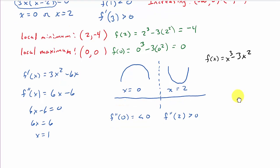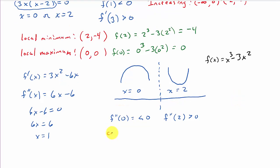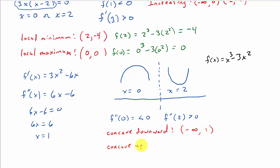So now we know that this is concave downward from negative infinity to 1, and concave upward from 1 to infinity. We've now found increasing and decreasing intervals, local max and min, and the concavity.